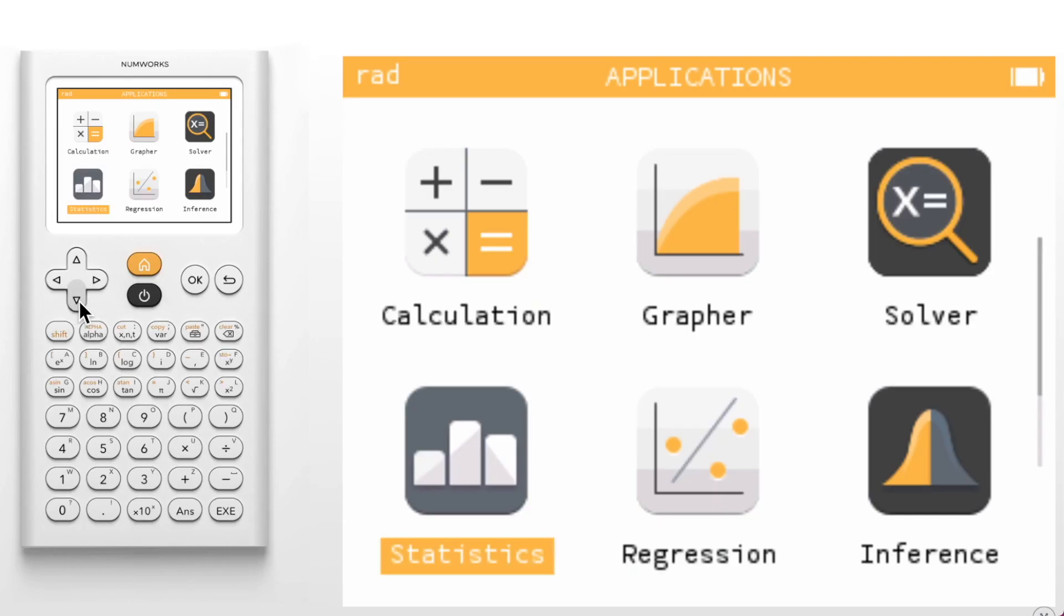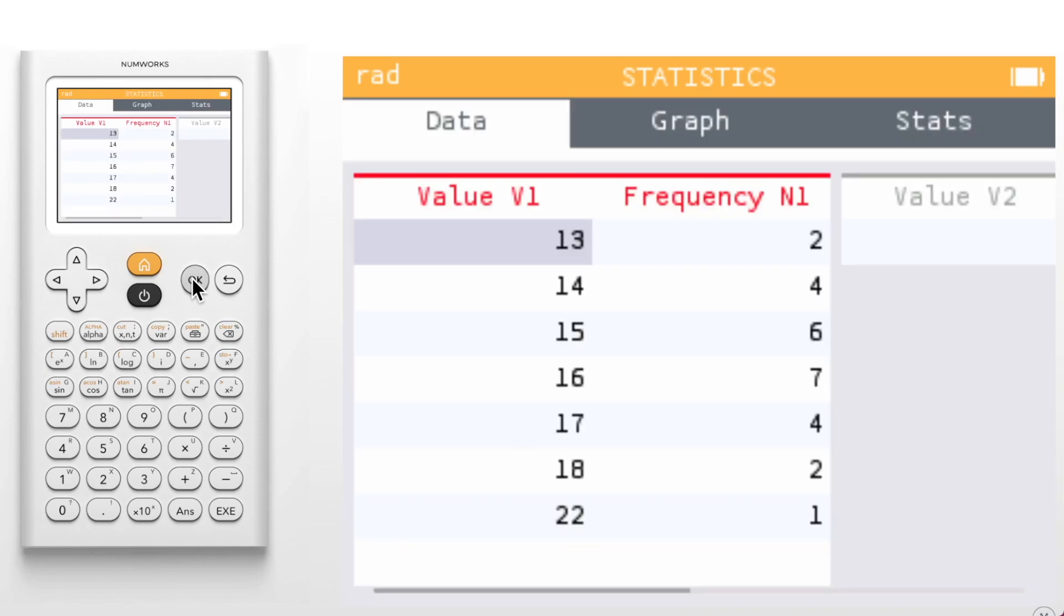Let's take a look by starting with the statistics application. When you first open the statistics application you'll notice that there are now only three tabs at the top of the screen: data, graph, and stats. We have combined the histogram and box tabs into a single graph tab and introduced two new graphing options.